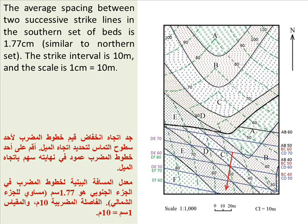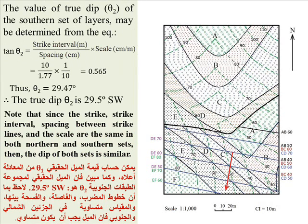The strike interval is 10 meters and the scale is 1 centimeter equals 10 meters. The true dip θ₂ is determined from: tan θ₂ = strike interval / (spacing × scale). By substitution: 10 / (1.77 × (1/10)) = 0.565, thus θ₂ = 29.47°, giving a true dip of 29.5° southwest. Since the strike interval, spacing, and scale are the same in both the northern and southern sets, the dip of both sets is identical.